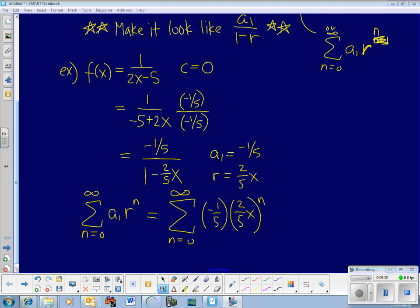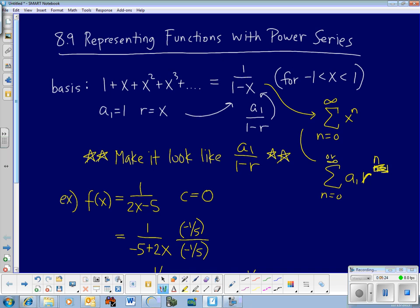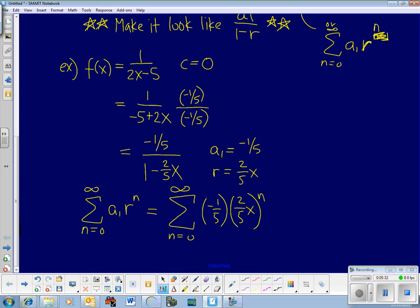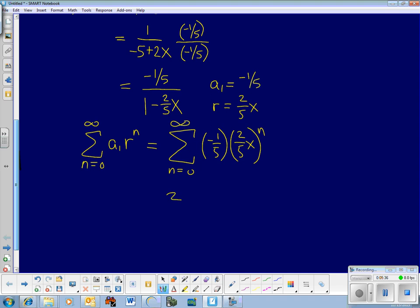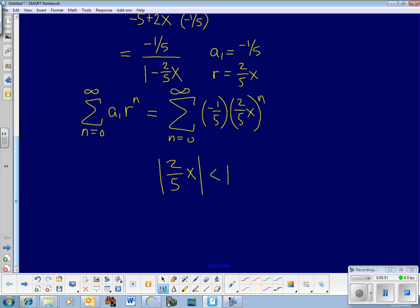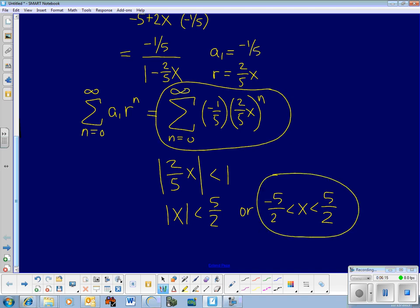Now, when is this true? Remember up here, our starting one is only true when the radius of, or when the r, the common ratio, is between minus 1 and 1. So how that applies down here is our r down here, 2 fifths x, needs to be between minus 1 and 1. You could also write it like this. The absolute value of it needs to be less than 1. And so to figure out our distance from x, we're basically going to multiply both sides of this equation by 5 halves or divide by 2 fifths. And what we get is absolute value of x is less than 5 halves. Or, if you prefer interval notation, it's going to look like that. So overall answer, here's my infinite series, here's my radius of convergence. And both of those things will get asked.